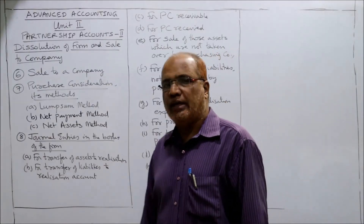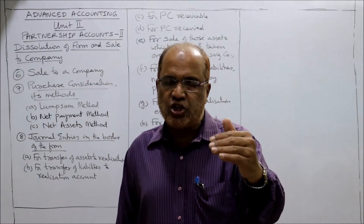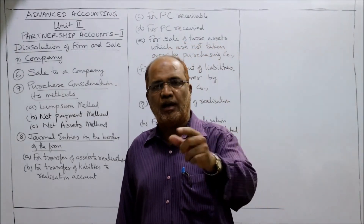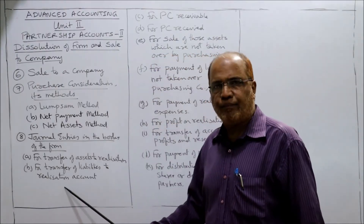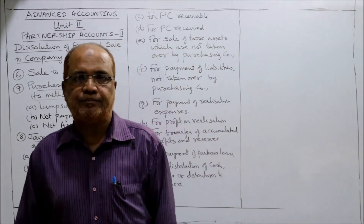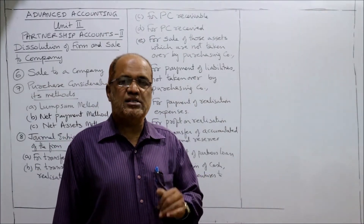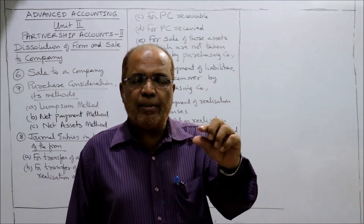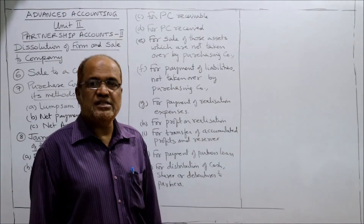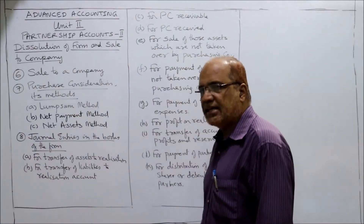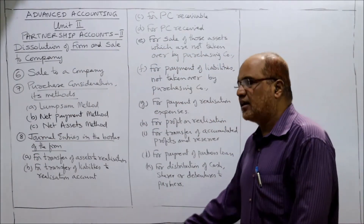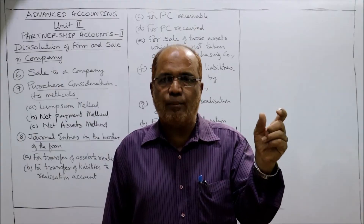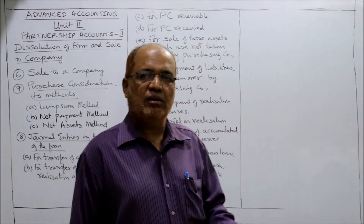The second entry is for transfer of liabilities to realization: Liabilities Account debit / Provision Account debit to Realization Account. The third entry is for PC due — when the purchase consideration is receivable from the purchasing company: Purchasing Company Account debit to Realization Account.